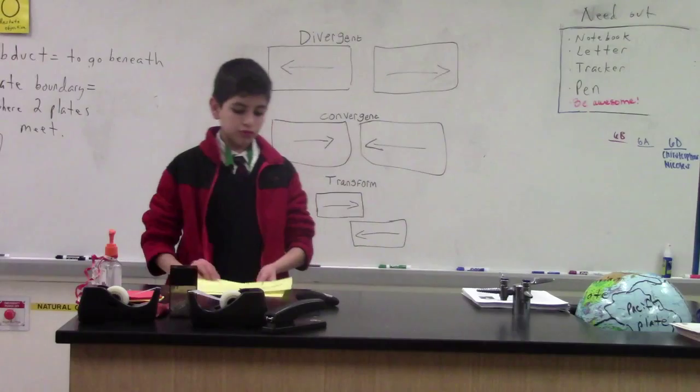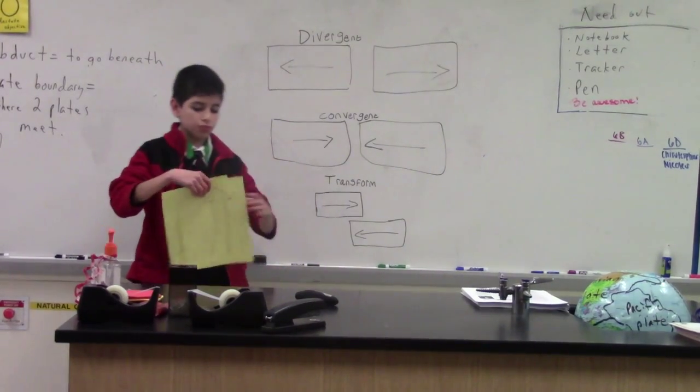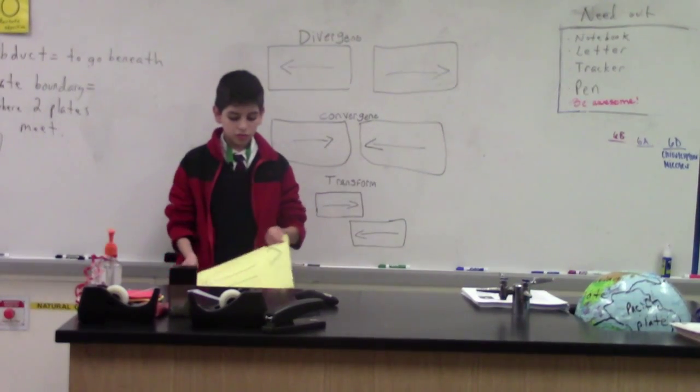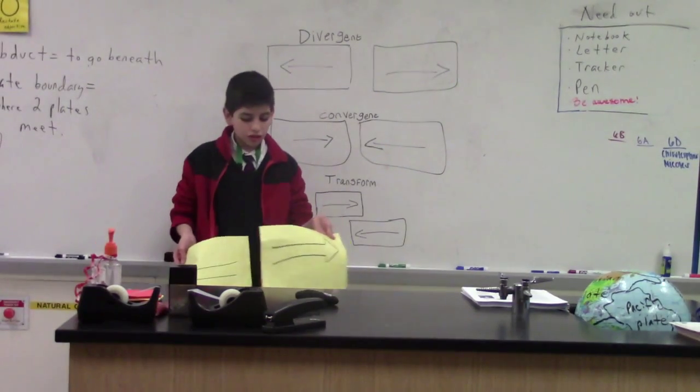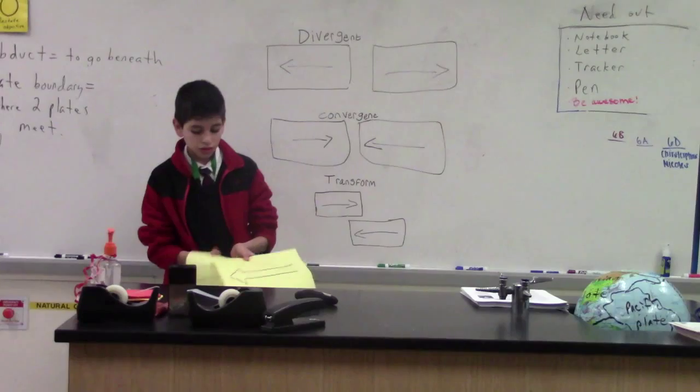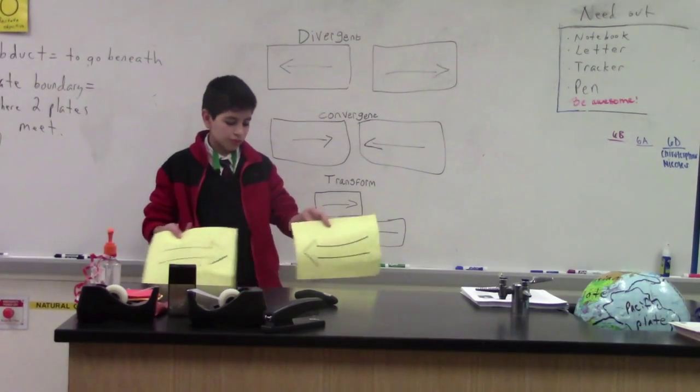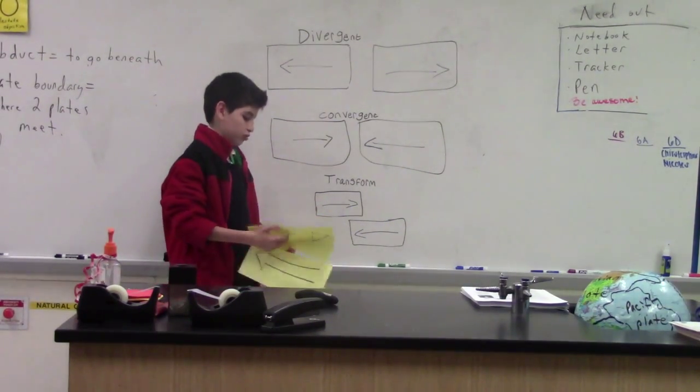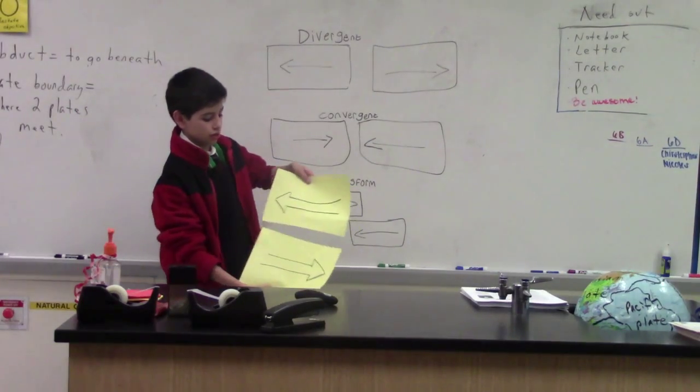In review, a divergent boundary looks like this with the arrows pointing away from each other, and a convergent boundary looks like this with the arrows pointing towards each other, and transform boundary looks like this with the arrows sliding against each other.